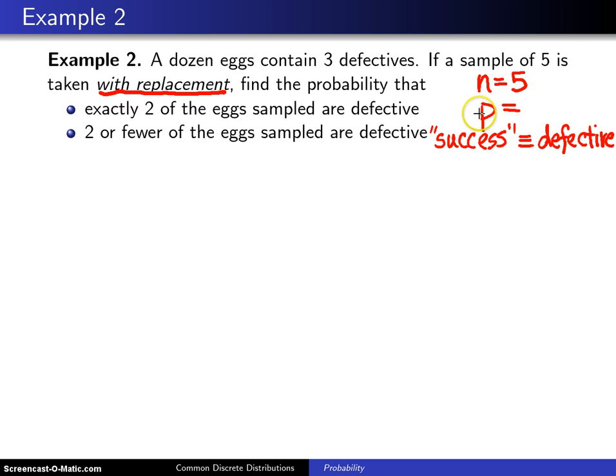If that's the case, then the probability of success on each trial, because we're replacing the eggs, is going to be 3 divided by 12. And 3 twelfths is the same as one-fourth.